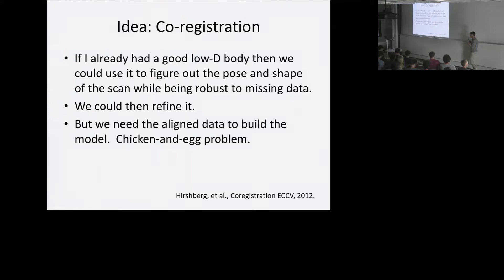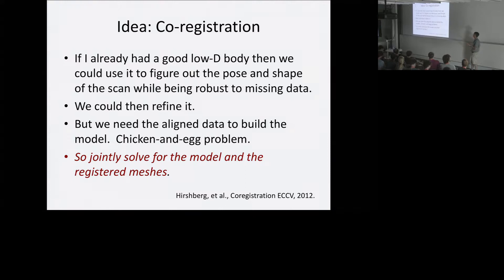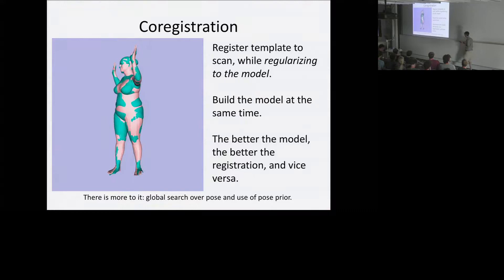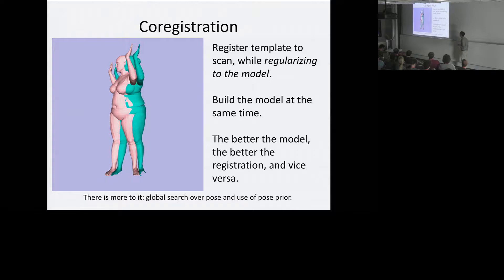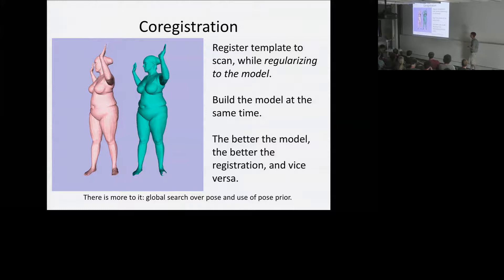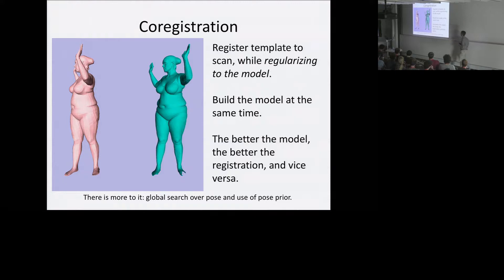We take a common template mesh and bring it into alignment with each scan. The template has about 7,000 vertices versus maybe 150,000 points in the scan, and scans often have missing data. We formulate a combined objective called co-registration, with the model and the alignment of all scans in one objective, and solve the whole thing jointly. The result is: you put scans in, and you get automatically fitted 3D meshes out, now in correspondence — so a vertex on the nose of one person corresponds to the same vertex on every other person's nose.